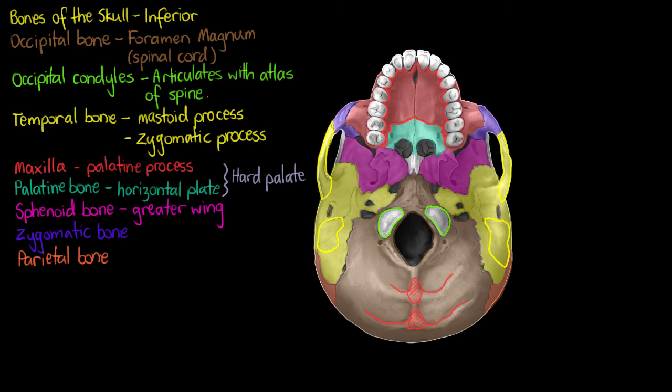So although I have labeled this as part of the parietal bone, remember that it is entirely possible that you may not see this bone at all on the inferior aspect depending on the person you're looking at.